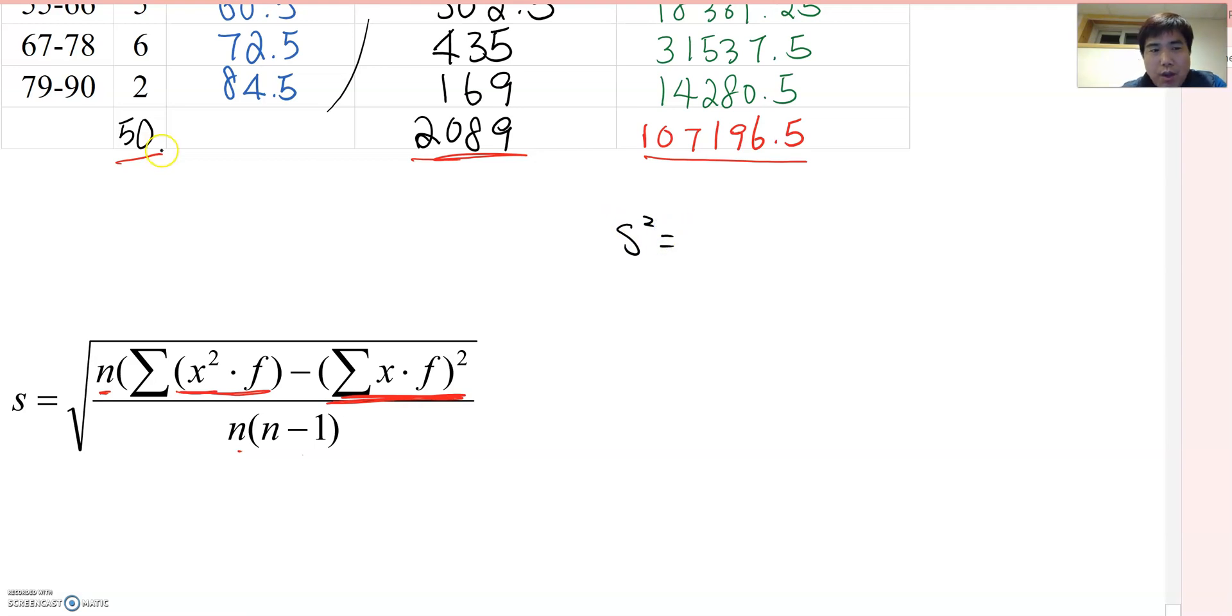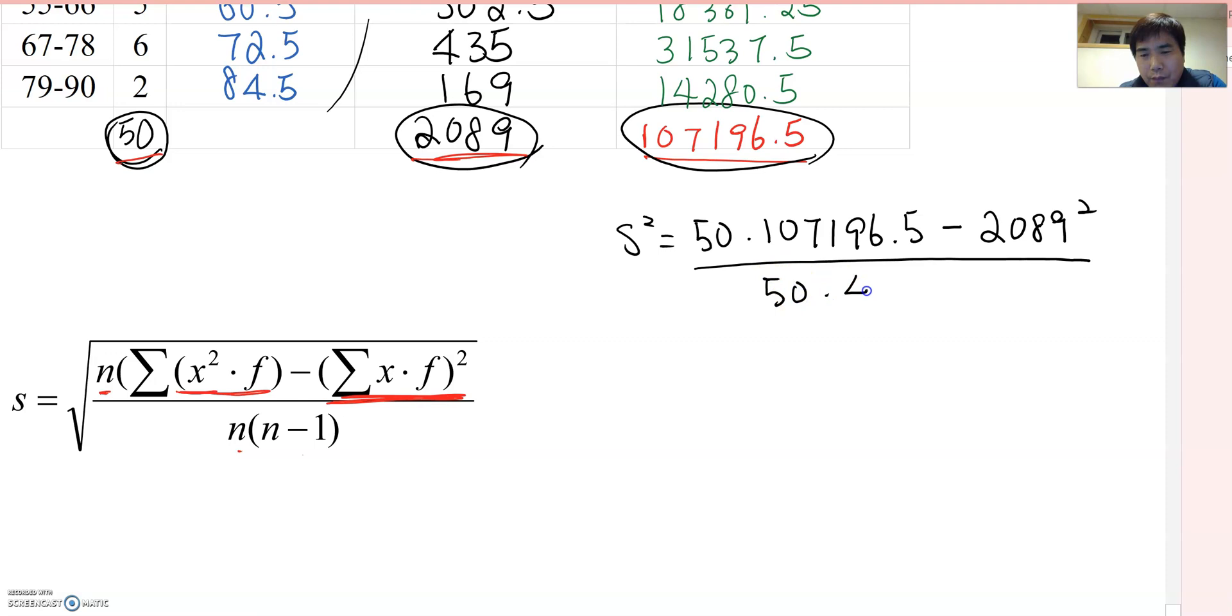S square becomes same way, 50 times this number, so 50 times 107196.5 minus this number square, so 2089 square, over total number of data 50 times 49. If you calculate that, so you will get about 406.491.